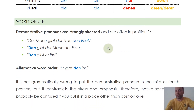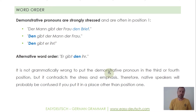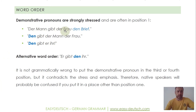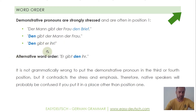Now let's look at the word order of demonstrative pronouns. They're always strongly stressed and therefore often in position one, because what is in position one is the part of the sentence we want to highlight — and that's exactly the task of a demonstrative pronoun. For example: 'Der Mann gibt der Frau den Brief' — no demonstrative pronoun there. But 'Den gibt der Mann der Frau' — here it's a demonstrative pronoun. 'Den gibt er ihr' — same sentence with personal pronouns. There's a video about personal pronouns in the info cards.